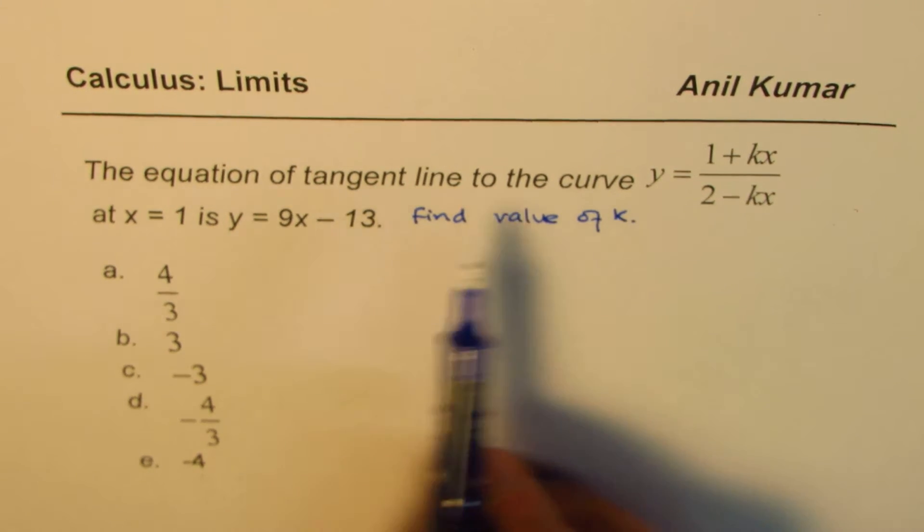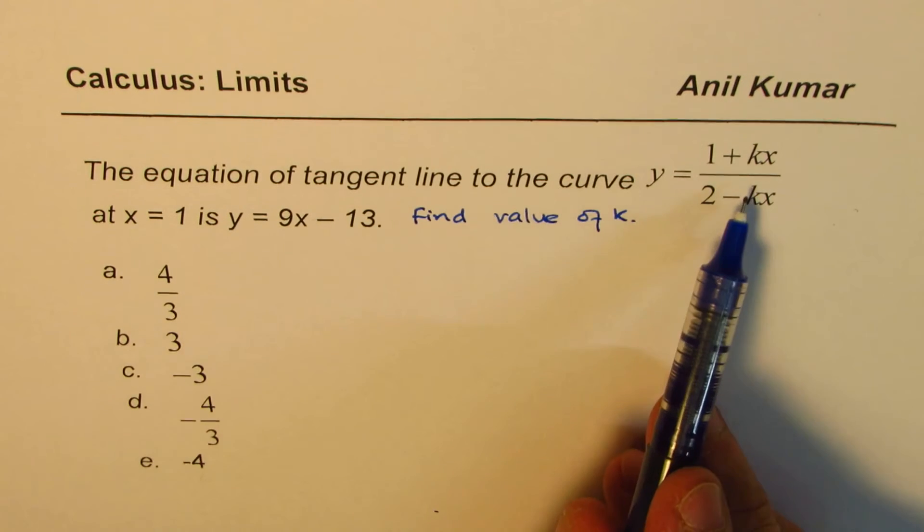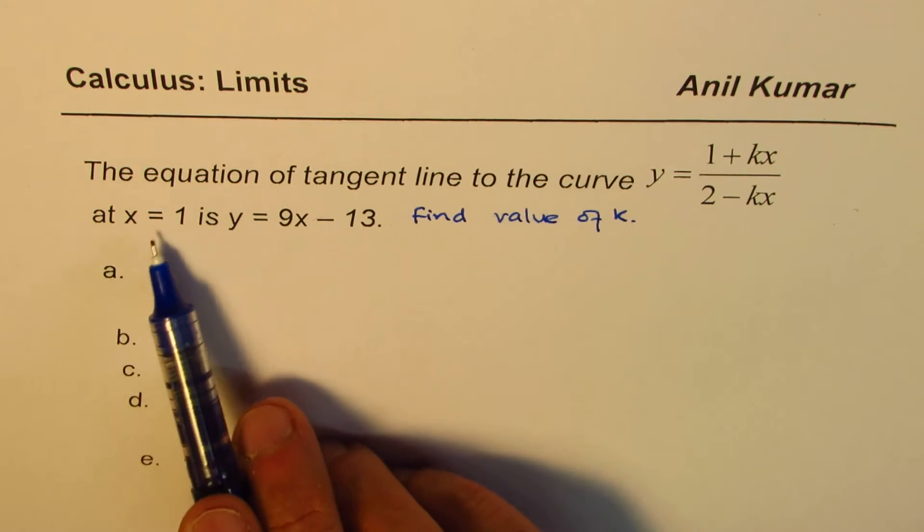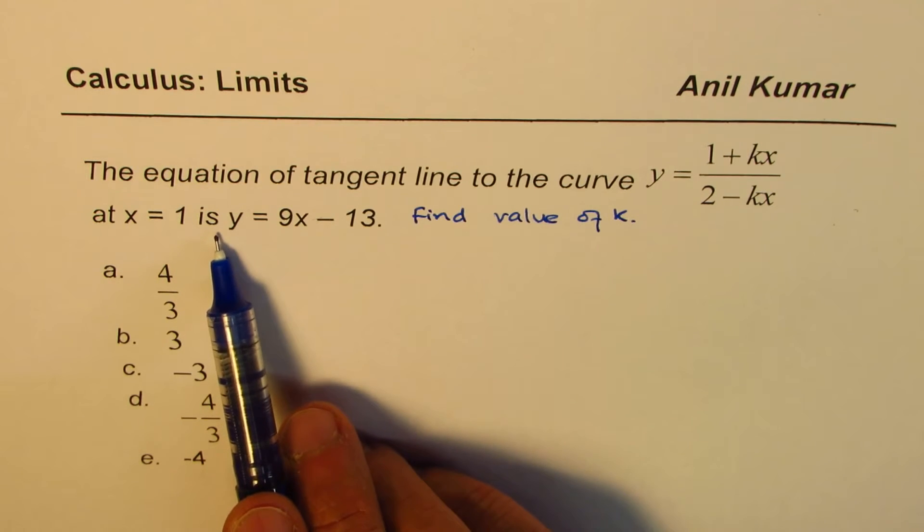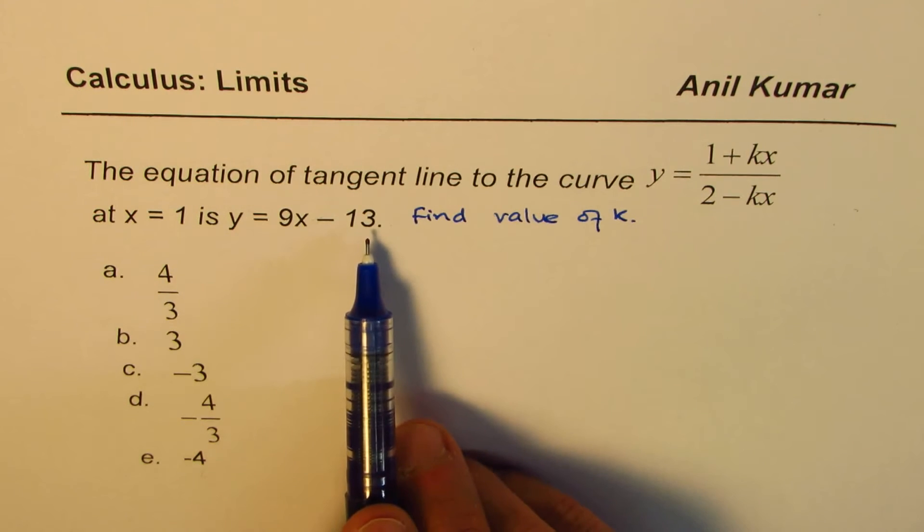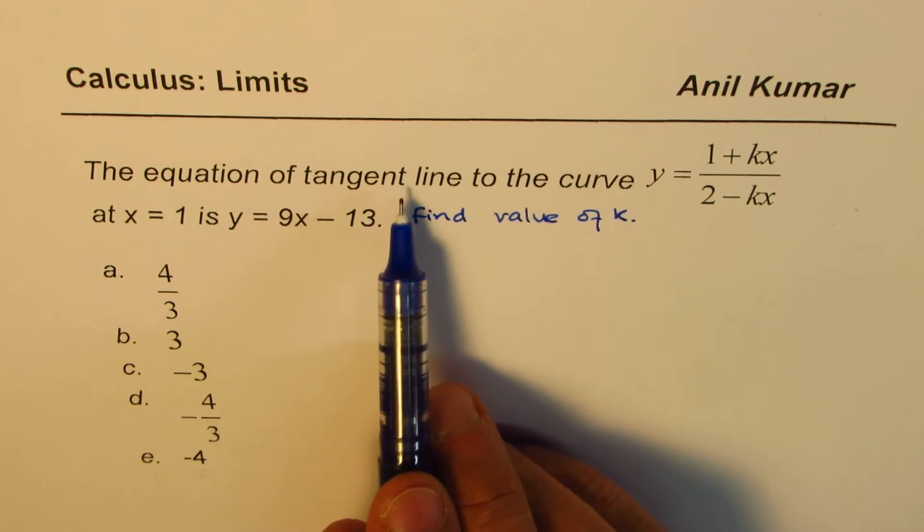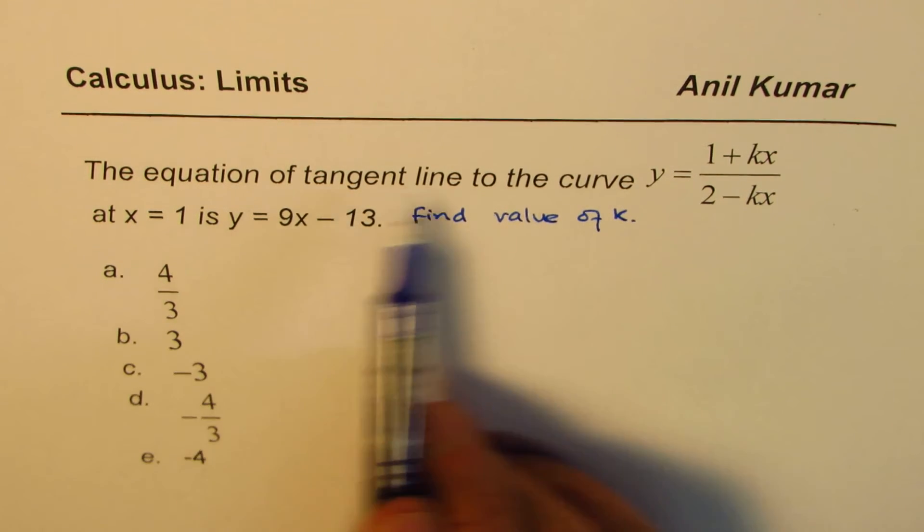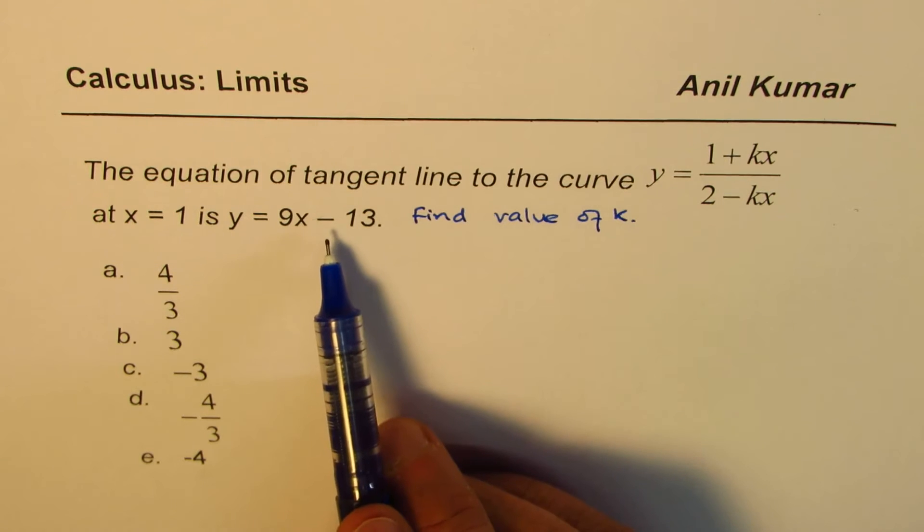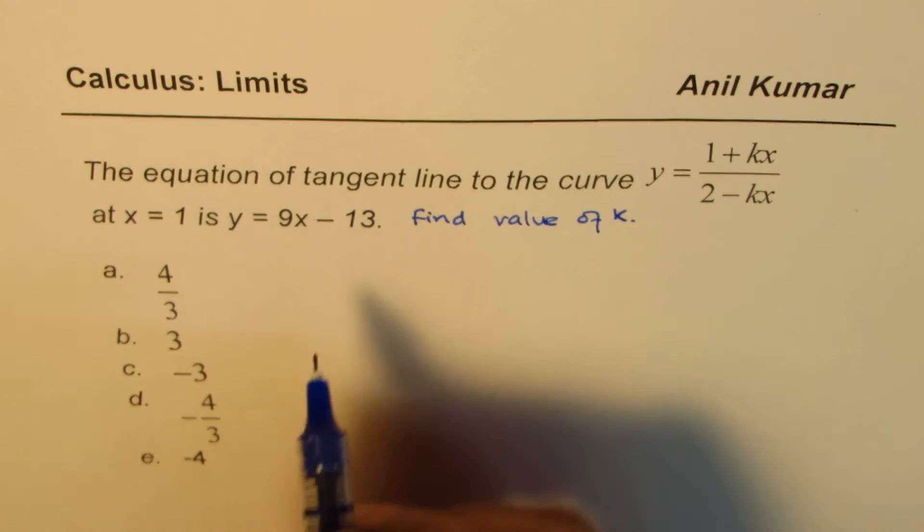The equation of tangent line to this curve at x = 1 is y = that value. On the curve, there is a point, and this point is common to the curve as well as the tangent line. It is the same point, so we can take advantage of that.